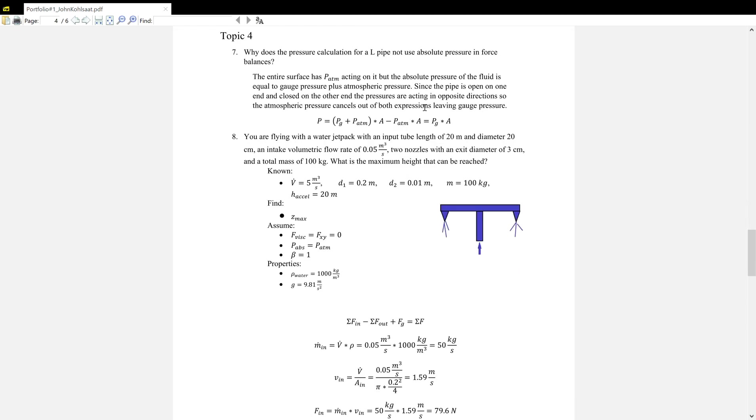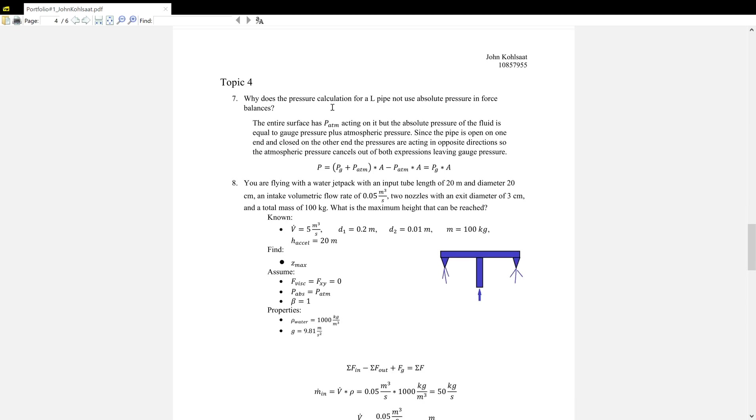Now, for topic number four, why does the pressure calculation for an L-pipe not use the absolute pressure and force balances? This is essentially because the atmospheric pressure acts on the entirety of the pipe. And because the pressure coming into the system on the open end is the atmospheric pressure plus the gauge pressure, the atmospheric pressure cancels out, and it's just left with the gauge pressure times area as the force acting on the system.